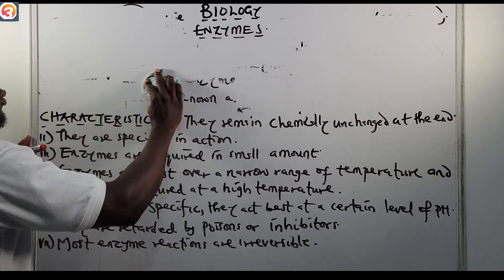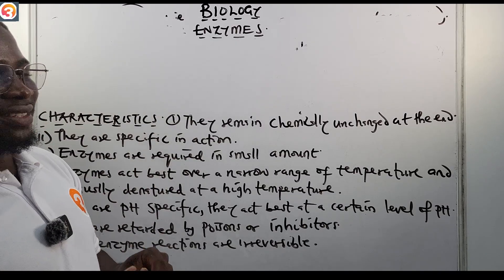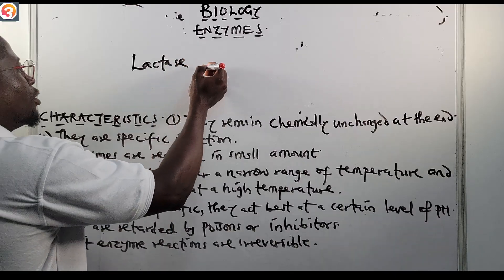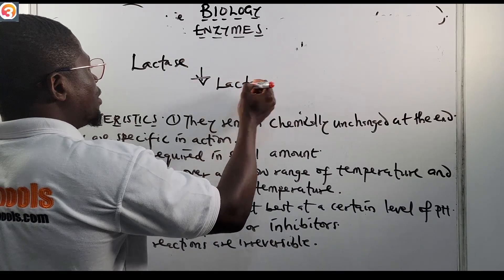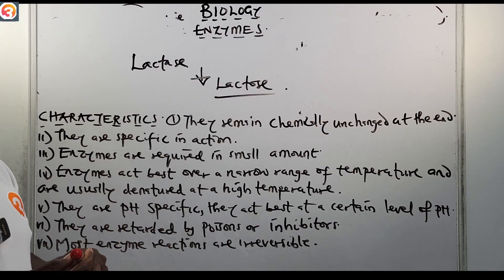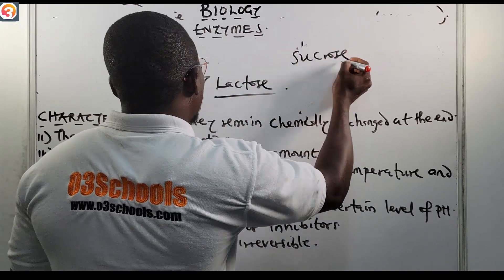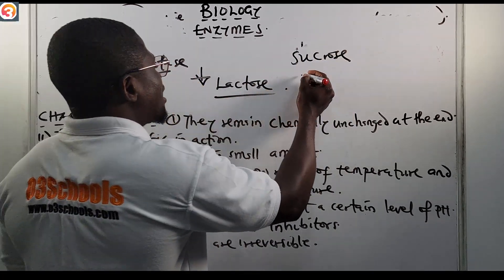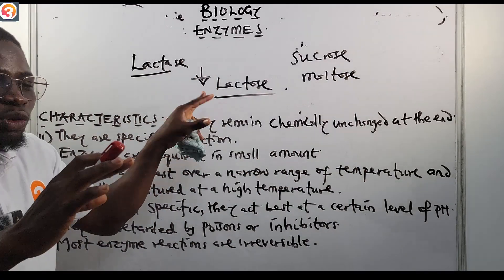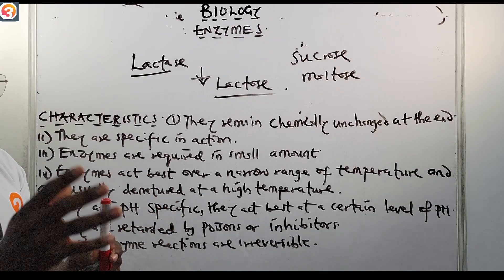Characteristic number one: enzymes are specific in action. For example, lactase is an enzyme that breaks down lactose. Because enzymes are specific in action, lactase cannot act on sucrose or maltose — it can only act on lactose.